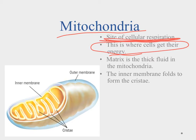In the mitochondria, we see a couple different things. We see this inner membrane, which has these folds. These folds are called the cristae, and that's a site for cellular respiration. There's also this fluid inside, and we call that the matrix. As we talk about cellular respiration and what happens in the matrix and what happens in the cristae, you'll have an idea of where these things are located.